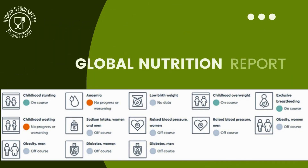The global nutrition report for India, released in 2021, revealed that out of the six global targets addressing stunting, wasting, anemia, low birth weight, and childhood obesity, India is off track in five of them. The main problem identified is a dietary shift away from whole, balanced food-based meals toward consuming more sugary drinks, ultra-processed foods, and processed red meat — which is negatively impacting nutrition, health, and the environment.